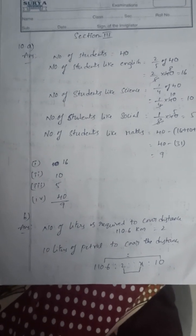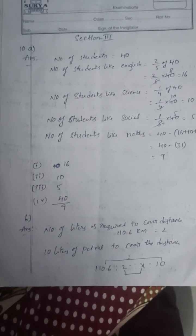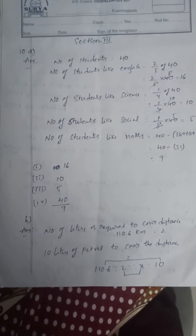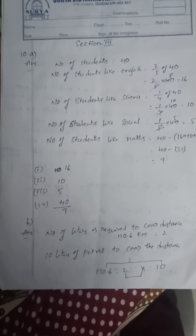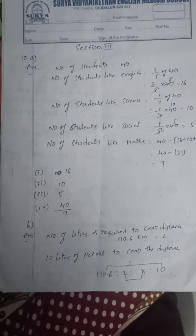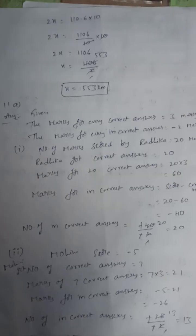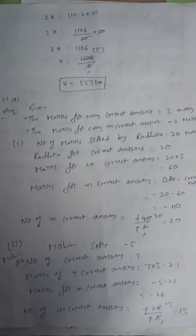Number of students: Distance of 110.6 kilometers is covered with 2 liters of petrol. So 10 liters of petrol can cover what distance? Here, 110.6 is to 2 as x is to 10. So x equals 553 kilometers.